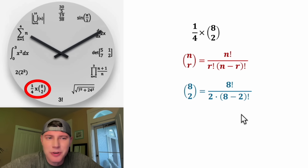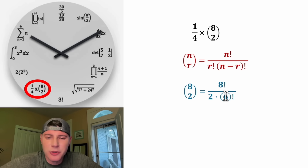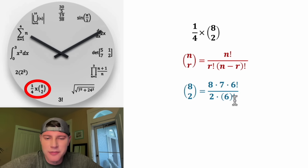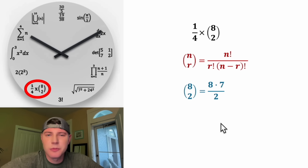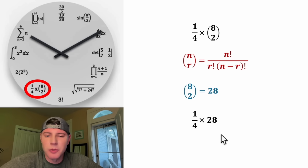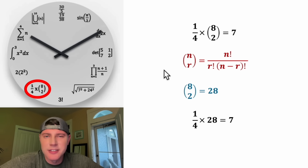Inside the parentheses, 8 minus 2 equals 6, so we have 6 factorial. On top, 8 factorial is the same as 8 times 7 times 6 factorial. The two 6 factorials cancel, leaving 8 times 7 over 2. 8 times 7 is 56, and 56 divided by 2 is 28. Now we do 1 fourth times 28, which equals 7. So this whole thing is equal to 7, and that's why it's at the 7 o'clock position.